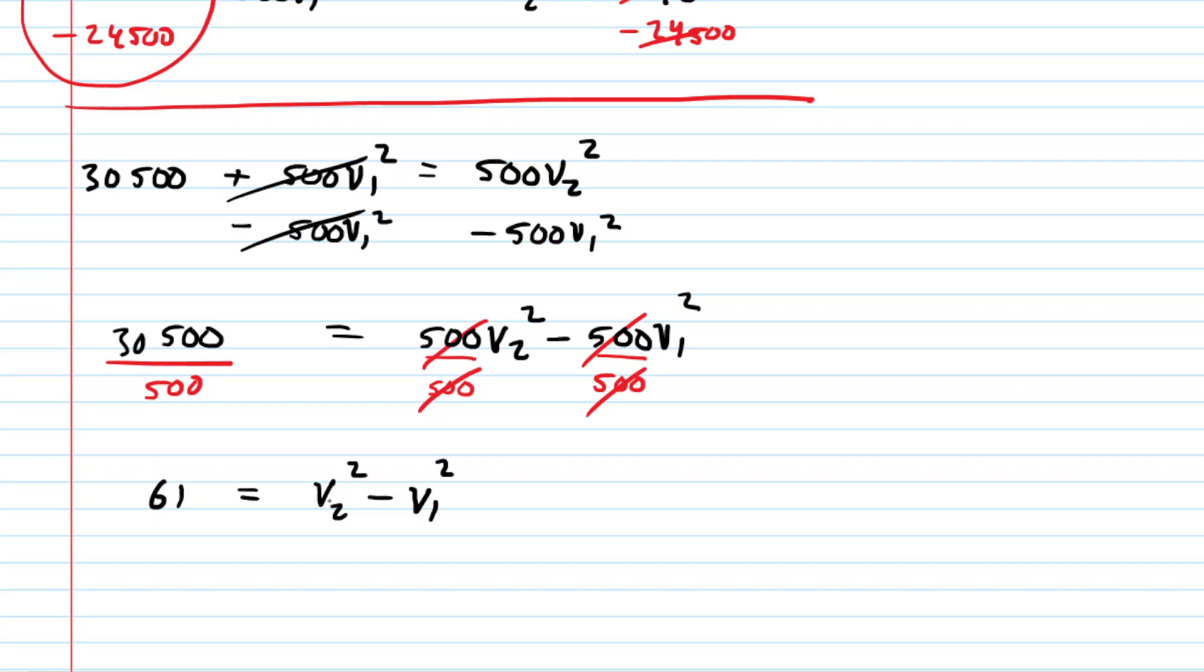This is great, but we still have two unknowns. We have v sub 2 and v sub 1. These are the velocities at the right and left sides of that constricted pipe. But we need another equation in order to solve for them. So let's take a look at the equation of continuity next.